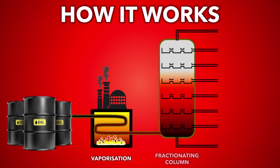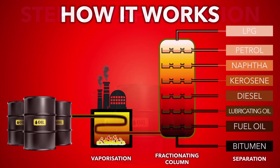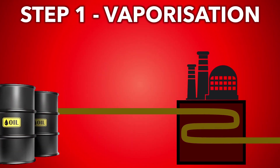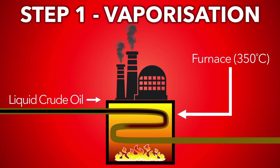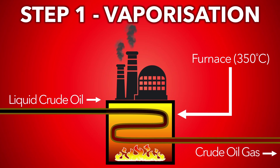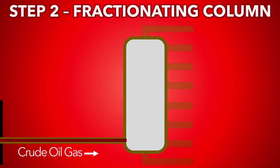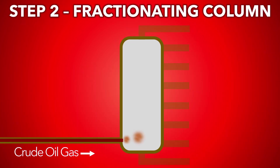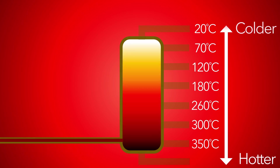First, let's see how it works. The liquid crude oil enters a furnace where it's vaporized into a gas. The crude gas then enters the fractionating column. The column is hotter at the bottom and colder at the top.